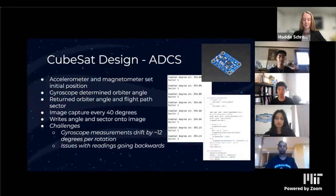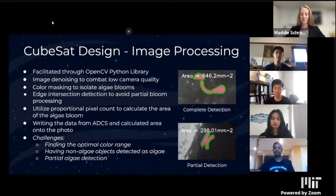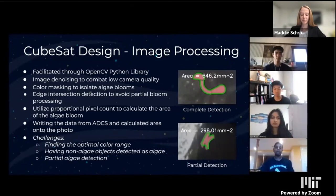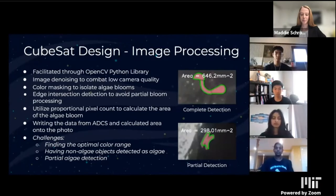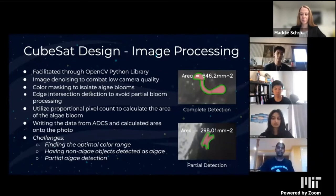Once we took those images, we transmitted them to the ground station where we processed them to find the areas of our simulated algae blooms. We used the Python library OpenCV — we first denoised the image to get more accurate readings, then masked out just the algae blooms using color, and calculated the area using a proportional pixel formula to correlate pixel count to real-world units. A major challenge was finding the right range of colors to properly isolate the algae blooms — you can see a complete detection versus a partial detection when the range wasn't quite right.